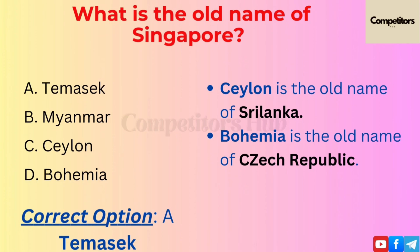Ceylon is the old name of Sri Lanka. Bohemia is the old name of the Czech Republic.